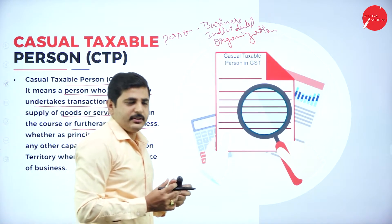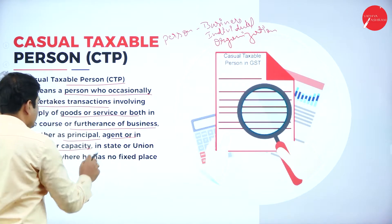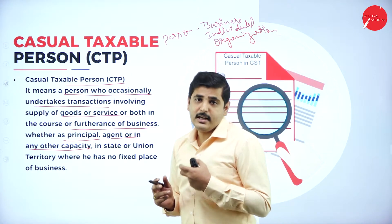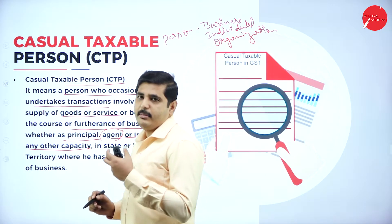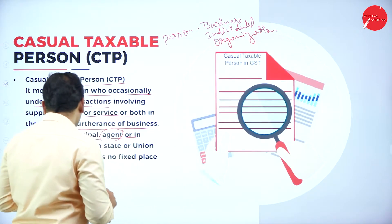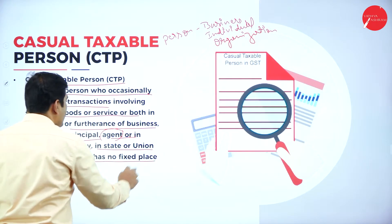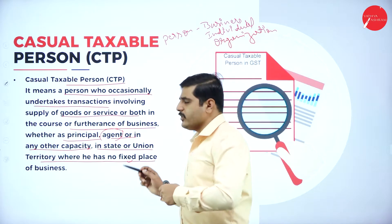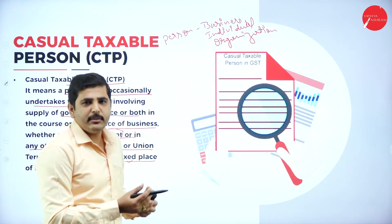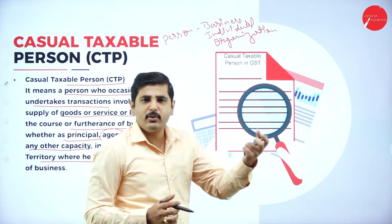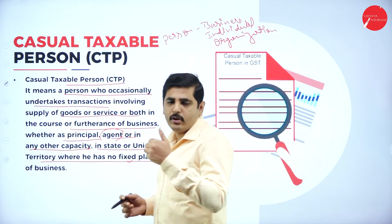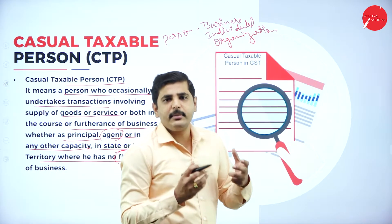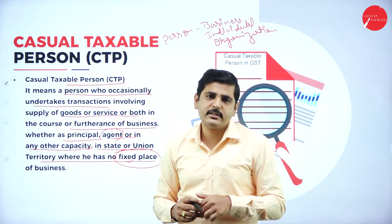Principal means the owner of the product - the actual or original producer of the product is called the principal. Agent means he may be a middleman, wholesaler, or retailer doing business. Next, in a state or union territory where he has no fixed place of business - under casual taxable person he will not have any fixed place or fixed address. For example, in Karnataka he will do business for two or three months, then go to Tamil Nadu, then other states. He will not have a fixed head office.